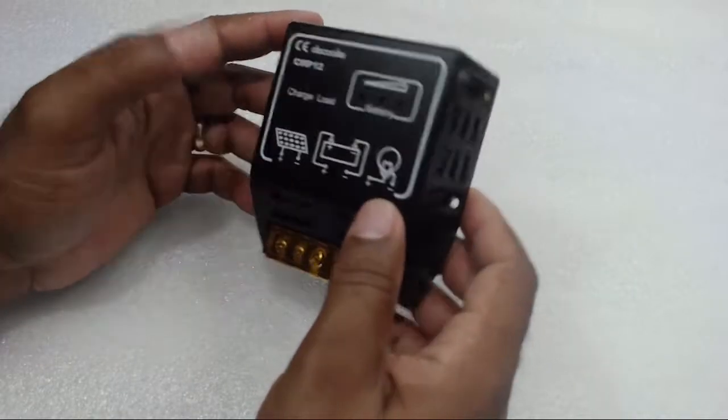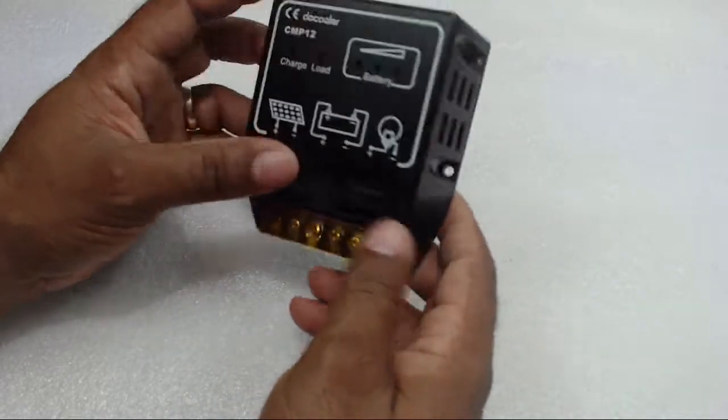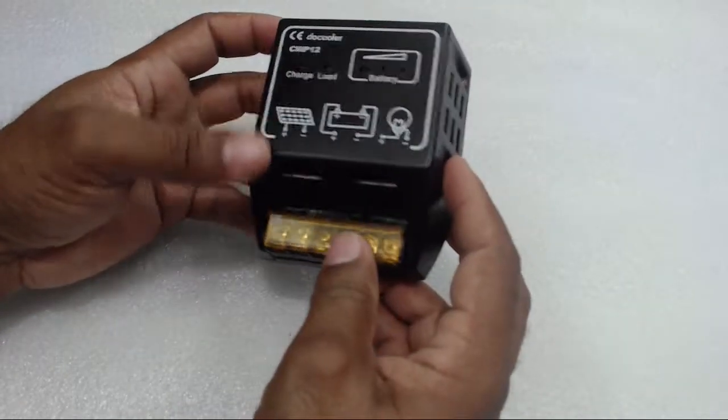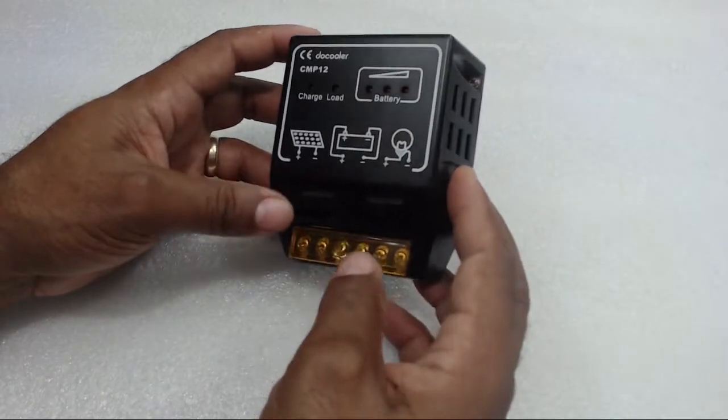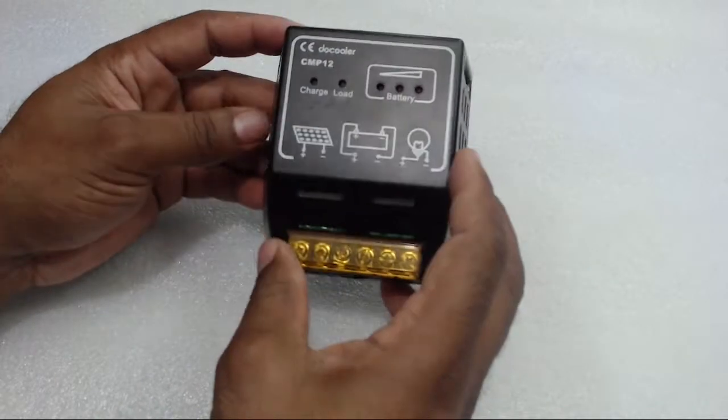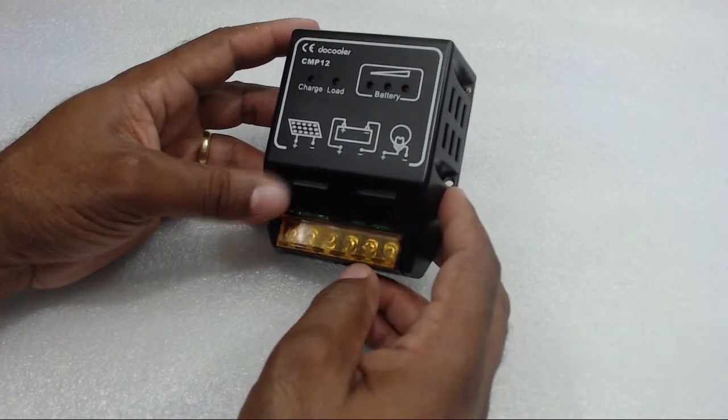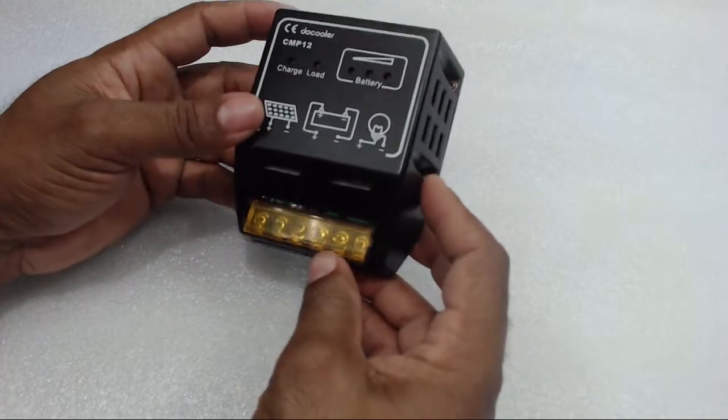Now let's review this solar charge controller solar panel battery regulator. The ratings here is 12 or 24 volts and it's 10 amps. This is a nice little charge controller for your solar panel.